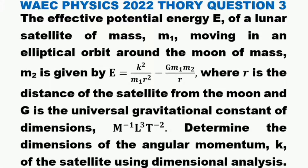Question 3. The effective potential energy E of a lunar satellite of Mars M1 moving in an elliptical orbit around the moon of Mars M2 is given by E = K²/(M1·R²) − G·M1·M2/R, where R is the distance of the satellite from the moon and G is the universal gravitational constant of dimensions M⁻¹L³T⁻². Determine the dimensions of the angular momentum K of the satellite using dimensional analysis.